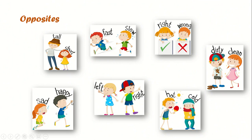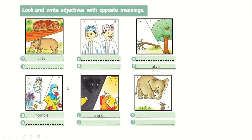Now look here — tall, short, fast, slow. These are adjectives, excellent! We have adjectives and their opposites: the opposite of tall is short, the opposite of fast is slow. And also: right/wrong, dirty/clean, sad/happy, left/right, hot/cold. Can you give me other adjectives with their opposites? Big/small — well done! Healthy/unhealthy — excellent! Good/bad — well done!